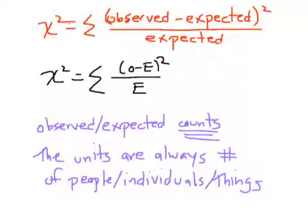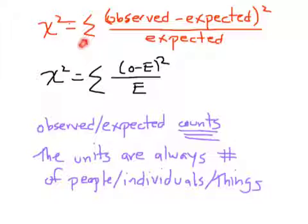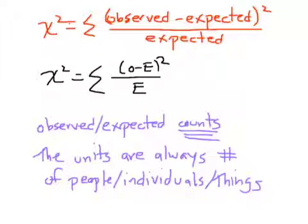Here's our super important chi-squared formula — the one really super important formula. Chi-squared, which is our test statistic (it's not a t-test, it's not a z-test, it's a chi-squared test), is the sum of observed minus expected squared over expected, sometimes written as sigma of O minus E squared over E. We're always going to talk about observed and expected counts, so the units are always number of people, number of individuals, number of things — never feet, inches, pounds, or miles per hour, and never a percent.